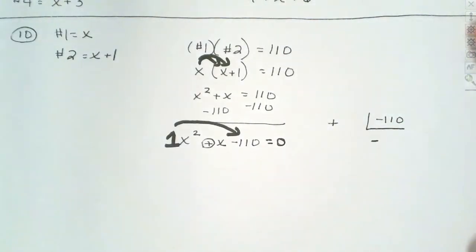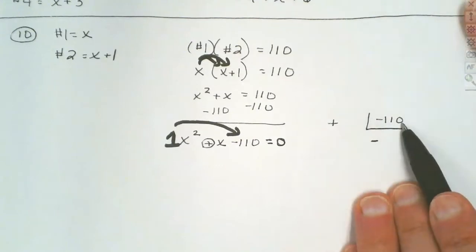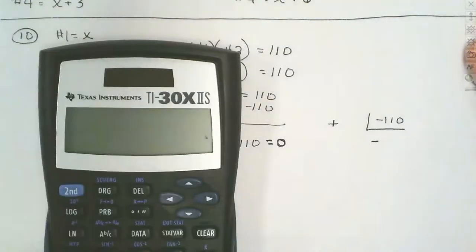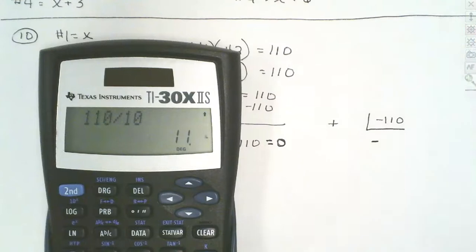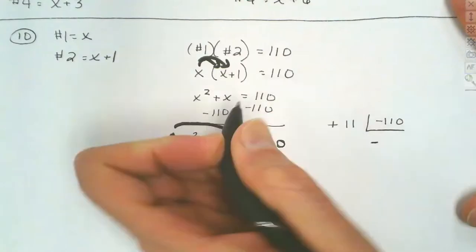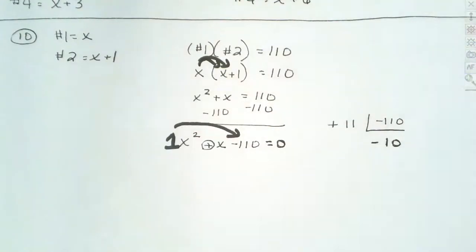We're going to begin with 10, because this number has a zero on the end — we can start with 5 or 10. 110 divided by 10 gives us 11. And 11 minus 10 is 1, which matches the middle term. So our two numbers are going to be positive 11 and negative 10. On most of these questions they're going to be very easy to factor — not really difficult problems as the factoring goes.